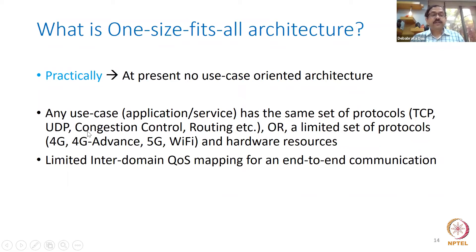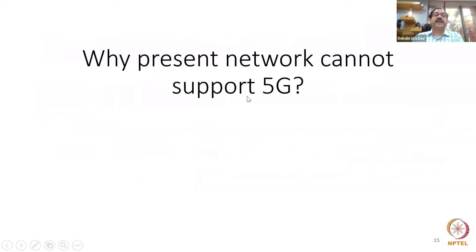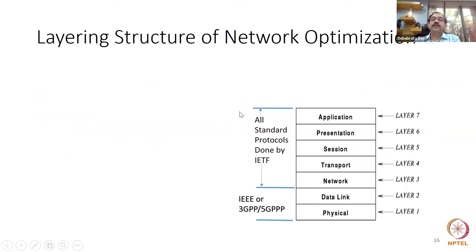Any application today uses the same set of protocols — TCP, UDP, congestion control, routing. Now look at the seven layers of architecture. Application, Presentation, Session, Transport, Network layers — these are standard protocols done by IETF, the Internet Engineering Task Force, the largest standard body that does standards for these protocols. The bottom two layers — Data Link and Physical — are done by 3GPP for 5G cellular and by IEEE for Wi-Fi.